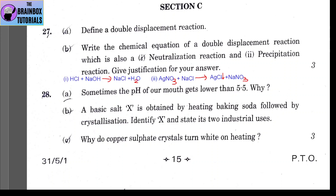Due to sugar or food particles stuck in the teeth, bacteria present in the mouth produce acid, and because of that acid, the pH of our mouth gets lower than 5.5.